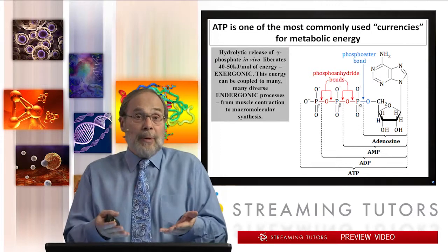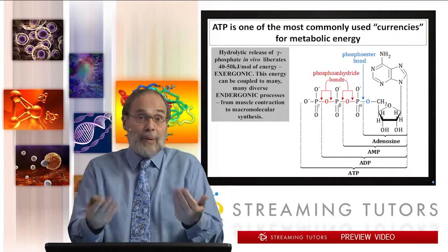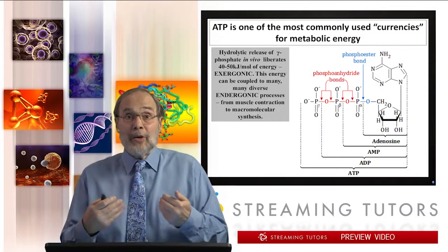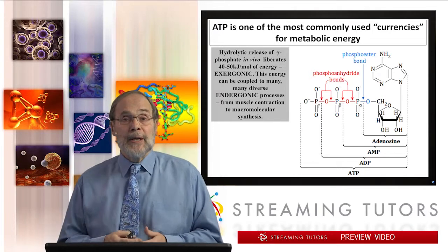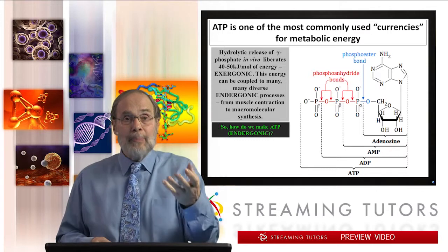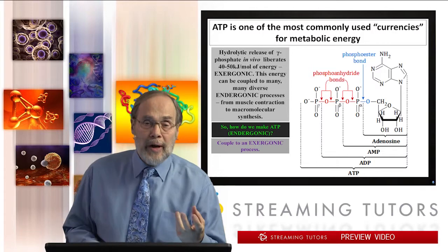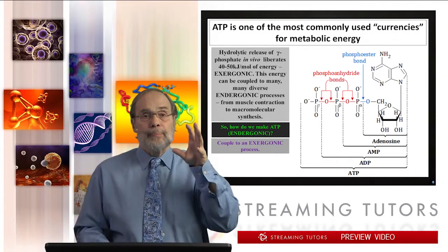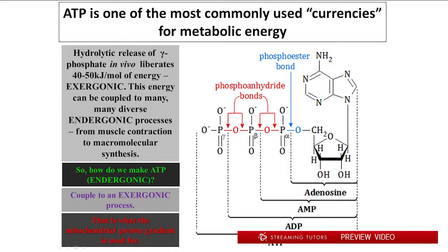The hydrolysis of ATP is exergonic. But to synthesize ATP — to run that process in reverse — is endergonic, and we need to couple it to another exergonic process to make ATP. To make ATP is endergonic; therefore, we need to couple it to a massively exergonic process. The proton gradient that we've spent the last segment generating through the electron transport system is going to be the source of that energy.